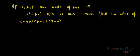We are given alpha, beta, gamma as the roots of the equation x cubed minus px squared plus qx minus r equals to 0. Let's try to find out the value of the symmetric function of the roots: alpha plus beta, beta plus gamma, gamma plus alpha.